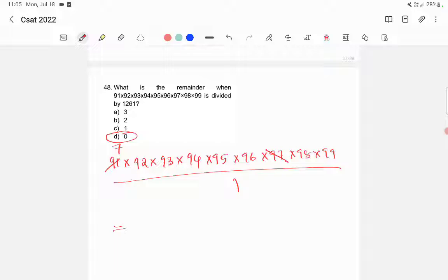Normally in this kind of question, there is a high chance that the answer option is 0 because there is a high chance that the numerator is exactly divisible by the denominator. You just need to check whether you are getting 0 or not.